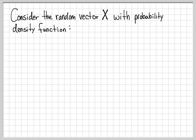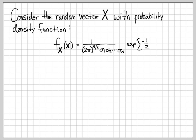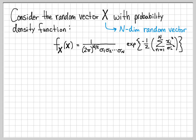In this example, we're going to work with the probability density function of a random vector. The random vector we're going to work with is x, and we were told that the probability density function for this random vector looks like the following. It's 1 over 2 pi to the n over 2 times all these sigmas, e to the minus 1 half, and then the summation term right here. This is the probability density function of the vector, and we can tell that this is an n-dimensional vector because there are n sigmas right here.